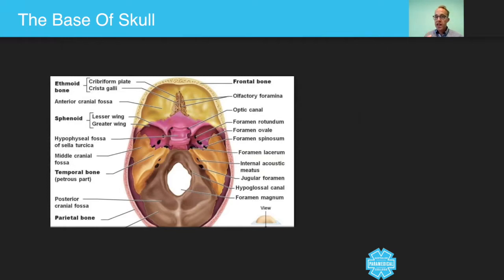You've got the optic canal. So again, cranial nerve, and you've got all these different spaces and structures within the base of skull. But number one is the base of skull keeps the brain inside the cranial vault. Number two, it's made up of four main types of bone.